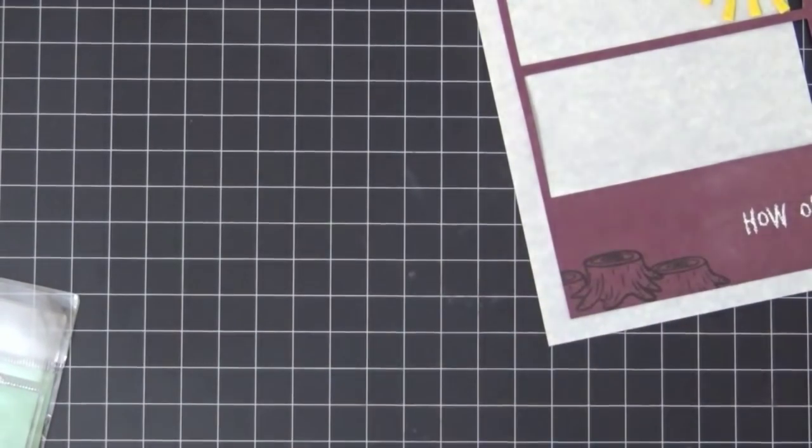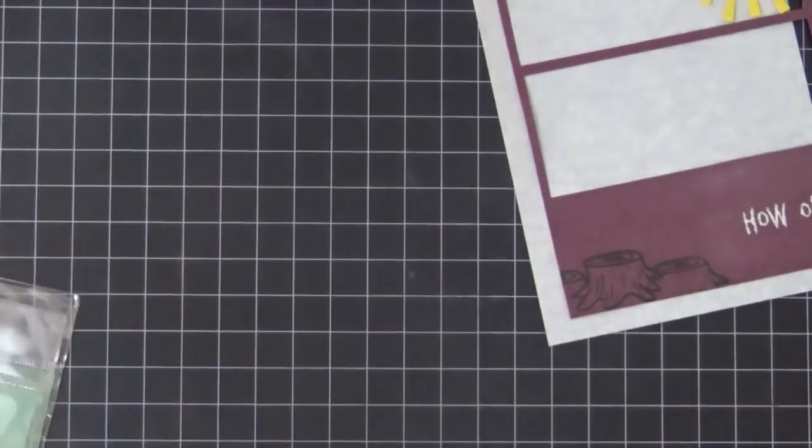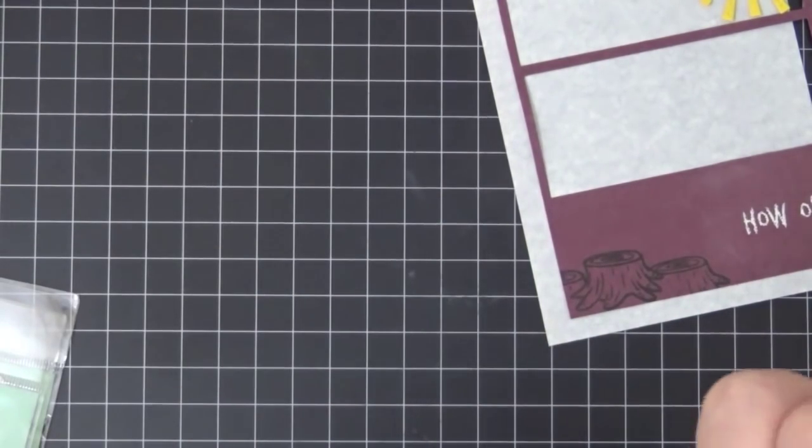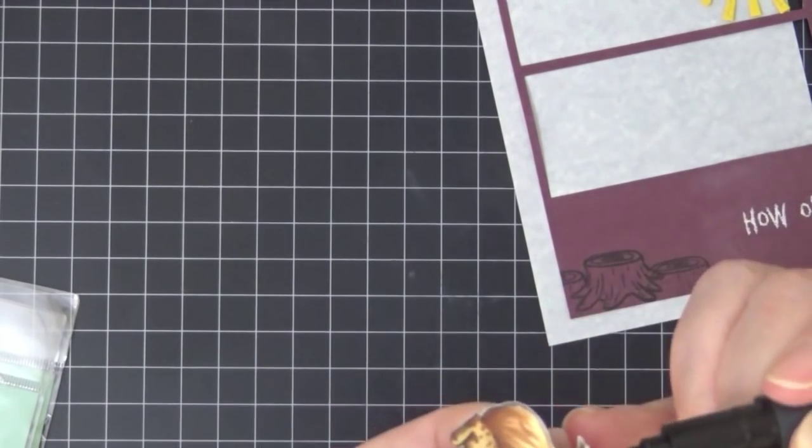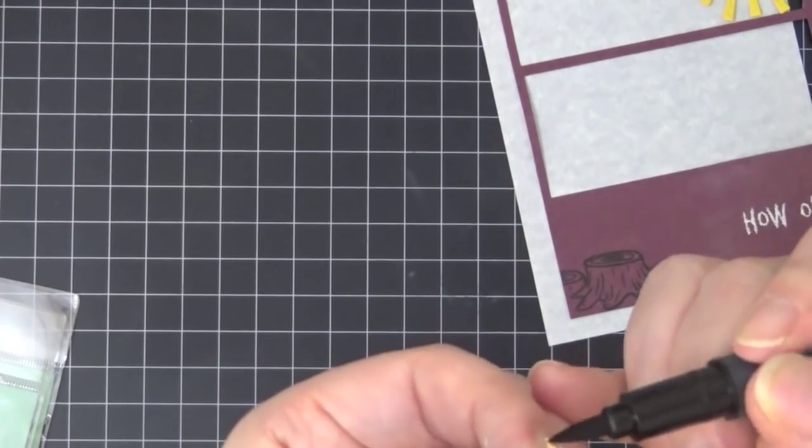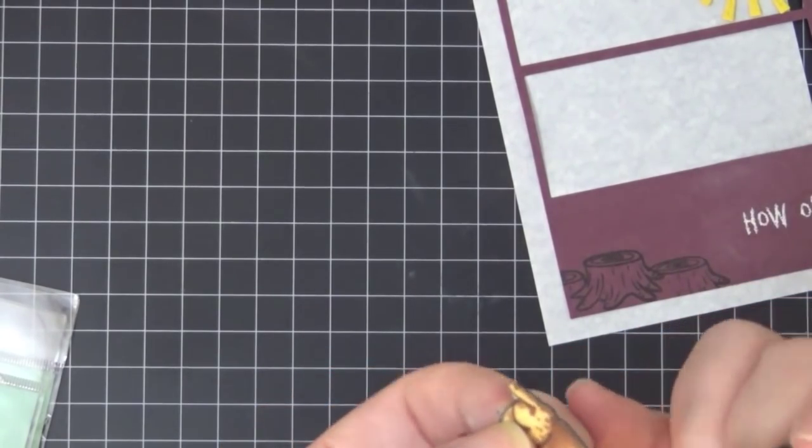And I'm going to go around the edges using a memento brush marker, so that there will be no white showing. So it kind of makes it look like it was cut perfectly.